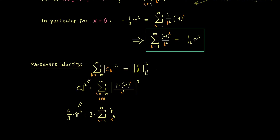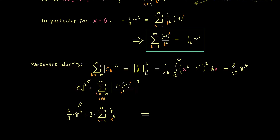The right-hand side of Parseval's identity is the inner product of f with itself, given by the integral with a factor of 1/(2π) in front. Inside the integral we find our quadratic function squared — a polynomial of degree 4, which is not hard to integrate. I'll skip the calculation and give the result: it's 8/15·π⁴. We then bring the other constant with π from the left-hand side to the right-hand side.